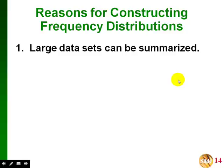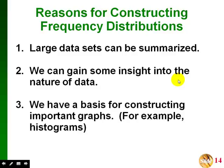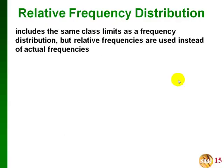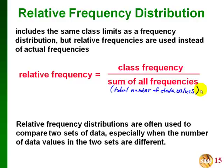Why do we spend so much time on frequency distributions? They are very useful, especially with large data sets — they allow us to summarize data and gain insight into its nature. They also give us a basis for constructing important graphs like histograms. There is also something called a relative frequency distribution, which uses the same class limits but reports relative frequencies — percentages — instead of actual counts. A relative frequency is the frequency for a class divided by the total number of data values.